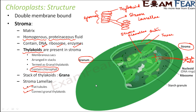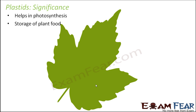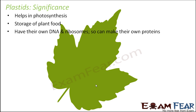So now you understand how the chloroplast looks from inside: it has a matrix called stroma, inside which there are coin-like structures called thylakoids arranged in piles called grana, connected to each other by stromalamellae, and these thylakoids contain the chlorophyll. As for the significance of plastids: they help in photosynthesis, and also help in storage of plant food — leucoplasts store starch, oils, and proteins. They also have their own DNA and ribosomes so they can make their own proteins, which is a similarity with mitochondria — they are self-dependent.